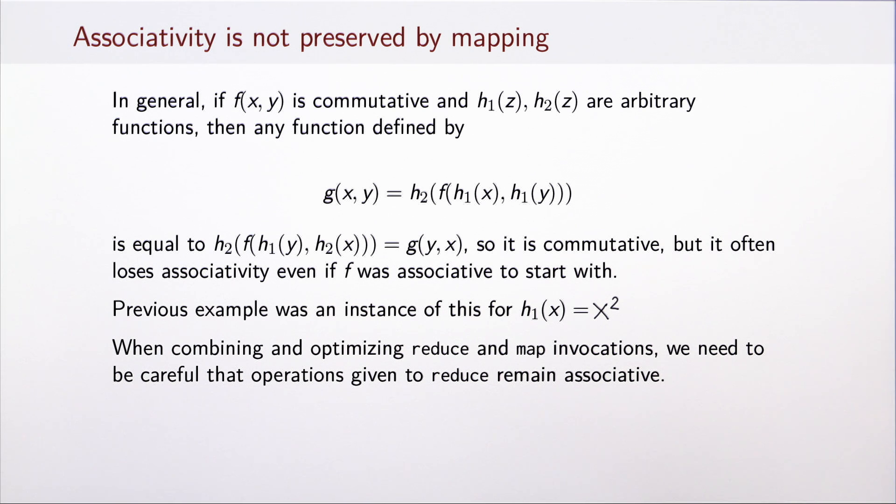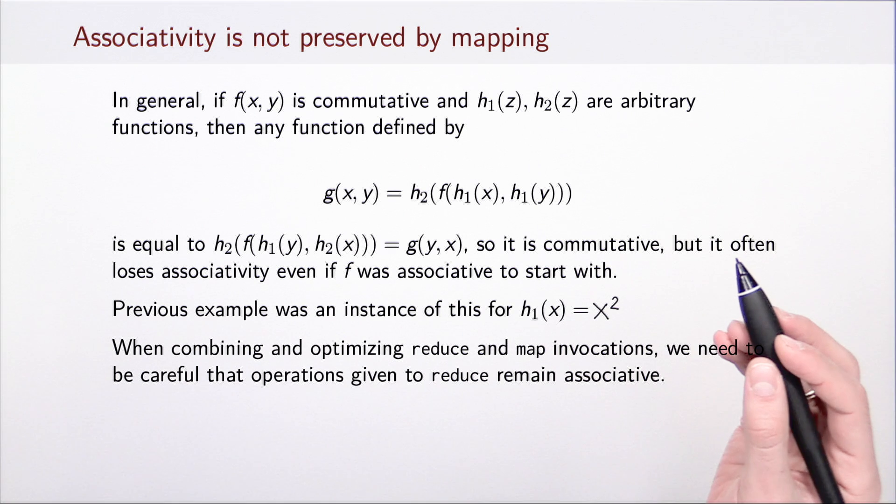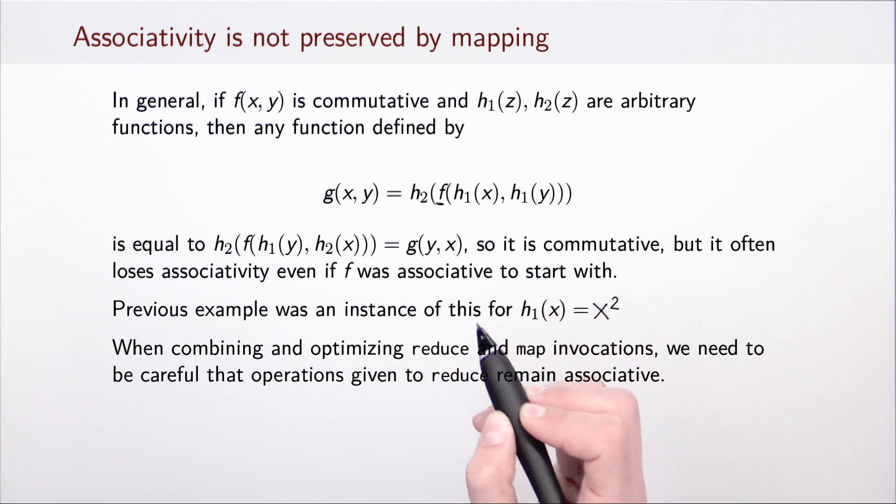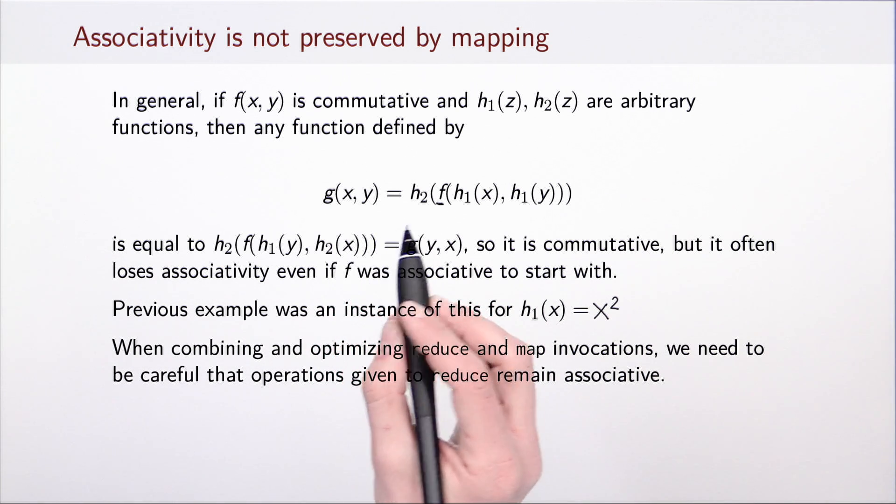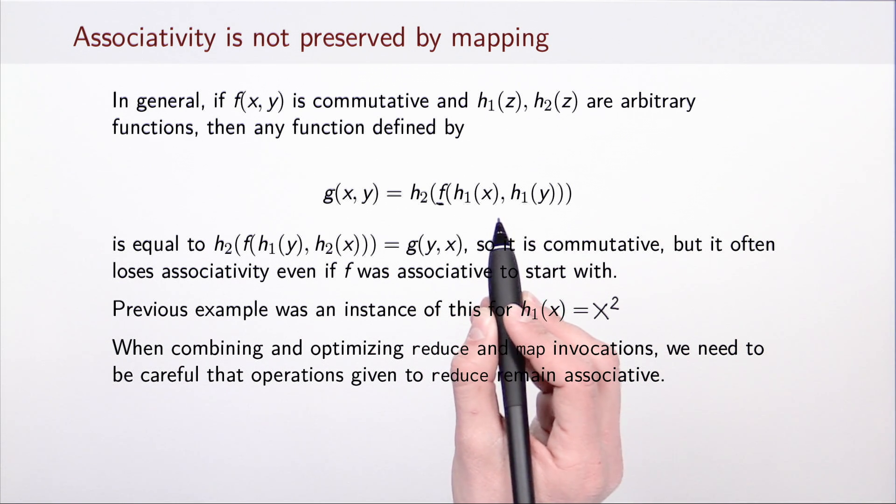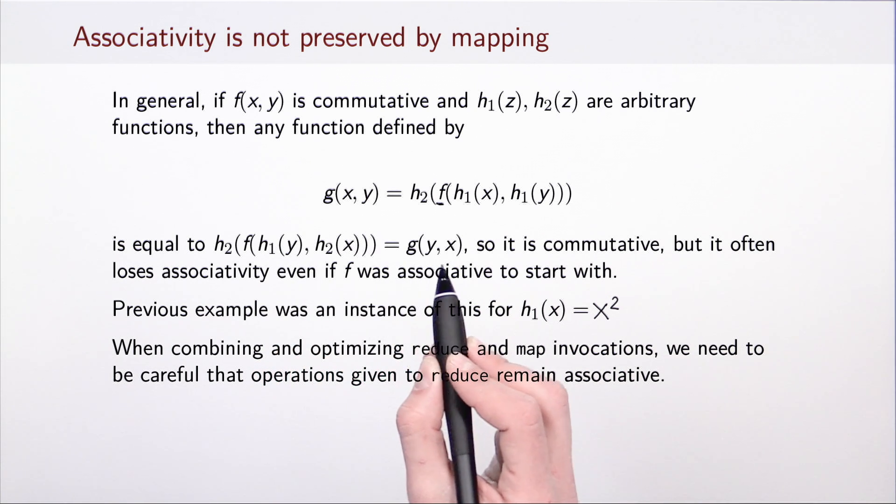In general, if f is a commutative operation and h1 and h2 are two functions of one argument, then the function g, defined by applying h1 to each of the arguments, then applying f, and then applying h2 to the result, remains commutative. Indeed, g(x,y) is equal to this expression, but if we swap the arguments of f, which is commutative, we obtain the following expression, and this is in fact g(y,x). So g is commutative.